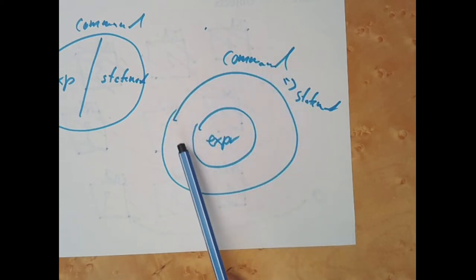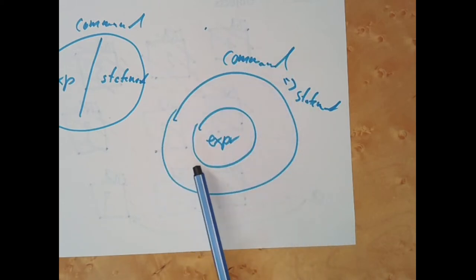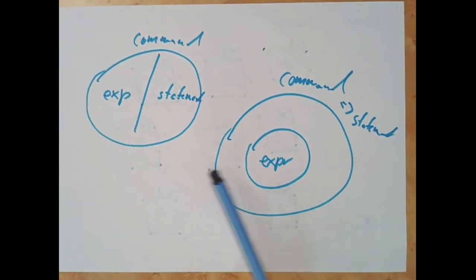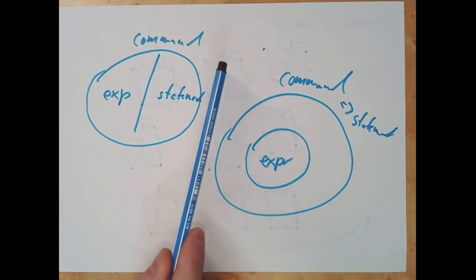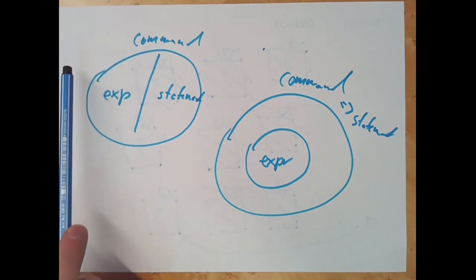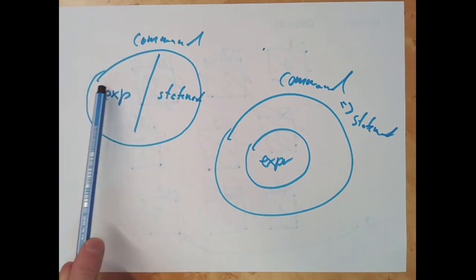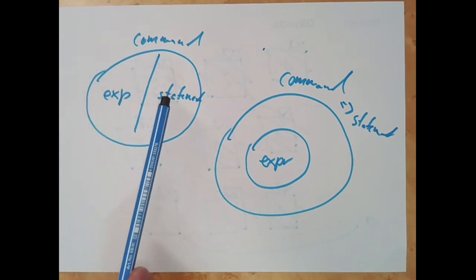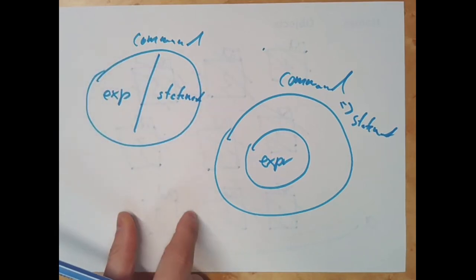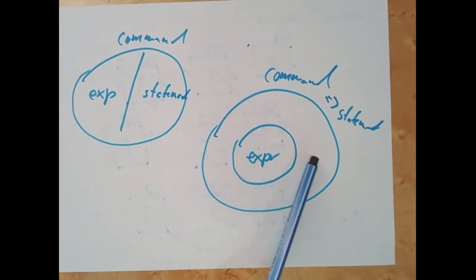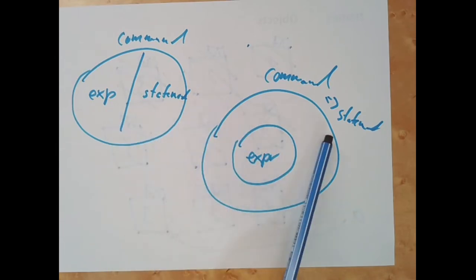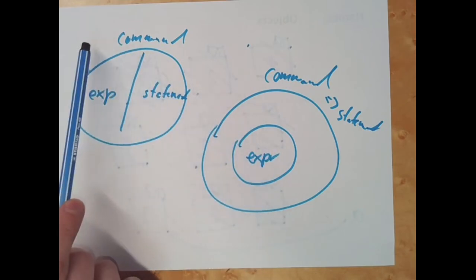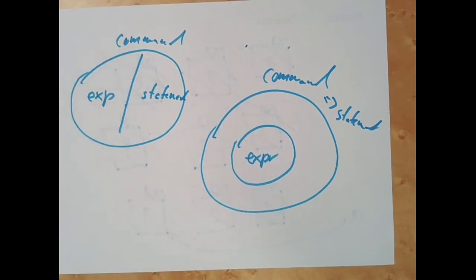Expressions are a perfect subset of statements — this is the theoretically correct way of viewing the terms, and the one I will be using in this lecture series. Don't be confused if you hear people use the terms as opposites. These are two possible conventions. The official Python documentation way is that statements include expressions. The other is a common practitioner usage where they are treated as mutually exclusive.